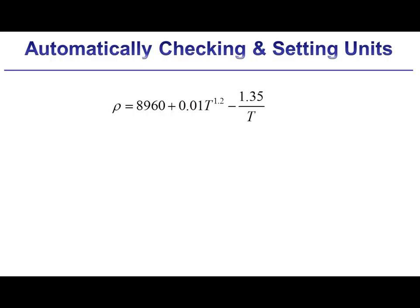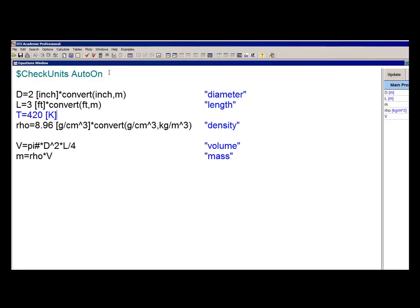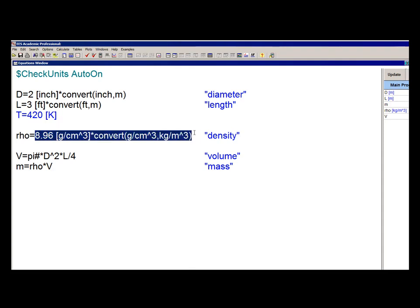For example, here's a curve fit for the density of copper as a function of temperature. And the density here is in kilograms per meter cubed. The temperature is in Kelvin. So if I want to use this curve fit to calculate density, then my input now is temperature. And then I'll use this curve fit to calculate the density.